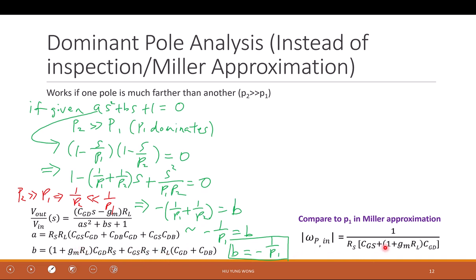Exactly. So you see that this is the same compared to our previous method. It's just that we have an extra RL times CGD plus CDB. CGD and CDB.